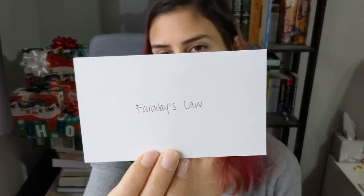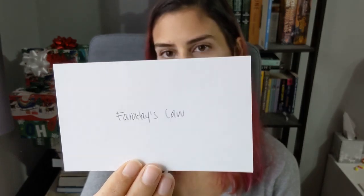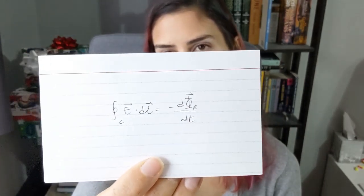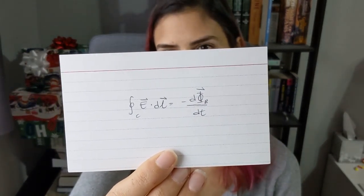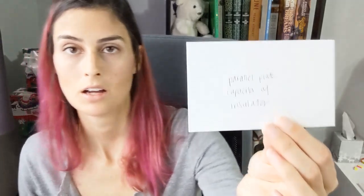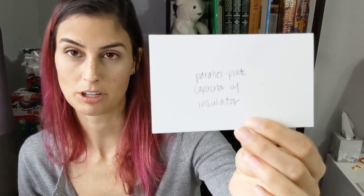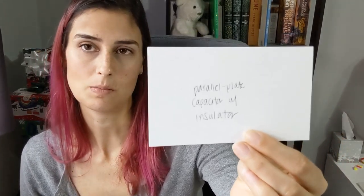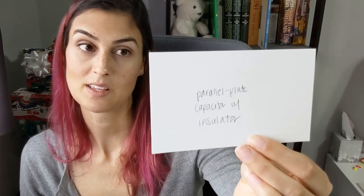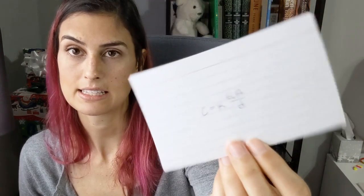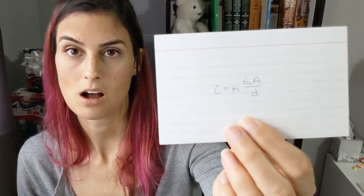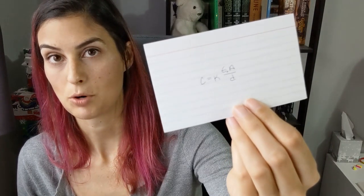Faraday's law: the integral of E dot dl equals negative d phi B over dt, where phi B is the magnetic flux. A parallel plate capacitor with an insulator — looking for the capacitance: C equals k epsilon naught A over d, where k is the dielectric constant, A is the area, and d is the separation distance.